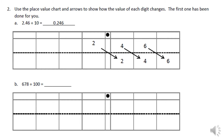Question two says to use the place value chart and arrows to show how the value of each digit changes. The first one is done for us: 2 and 46 hundredths divided by 10. When we multiply, digits shift left and get bigger, so when we divide it makes sense they go right and get smaller. The 6 moved one place value into the thousandths, the 4 moved one place into the hundredths, and the 2 moved one place into the tenths.